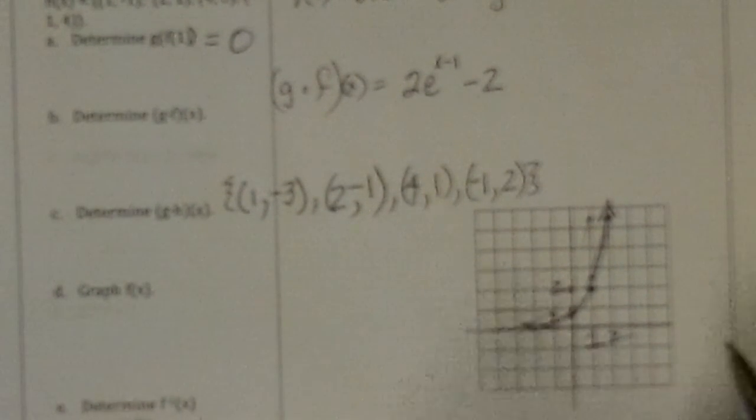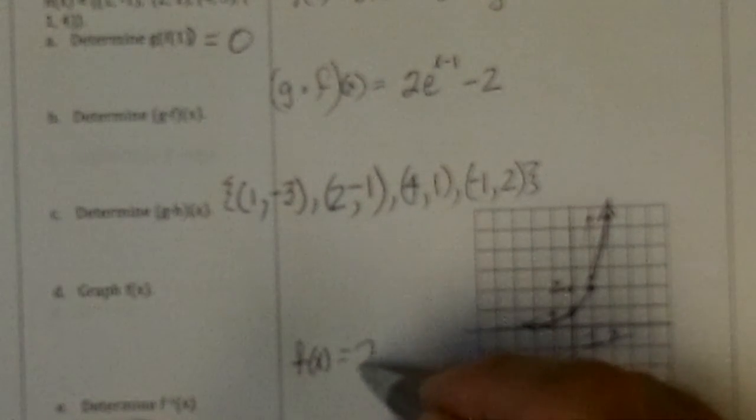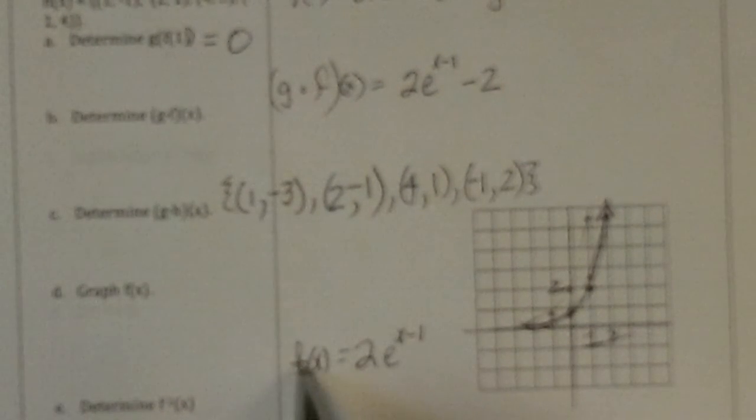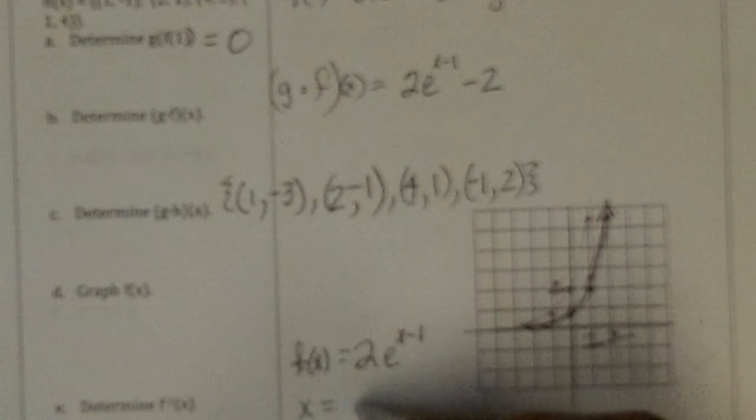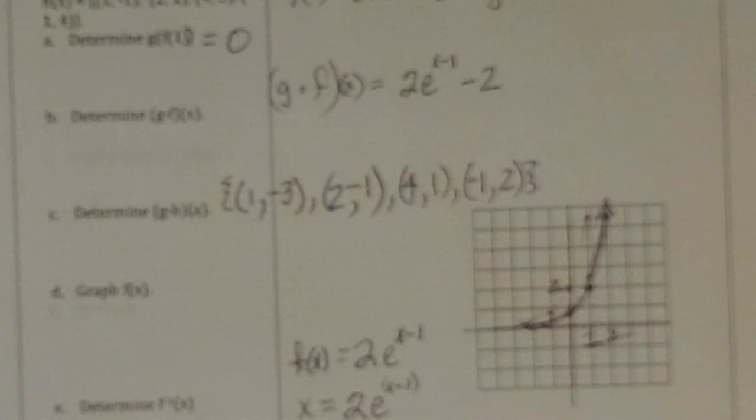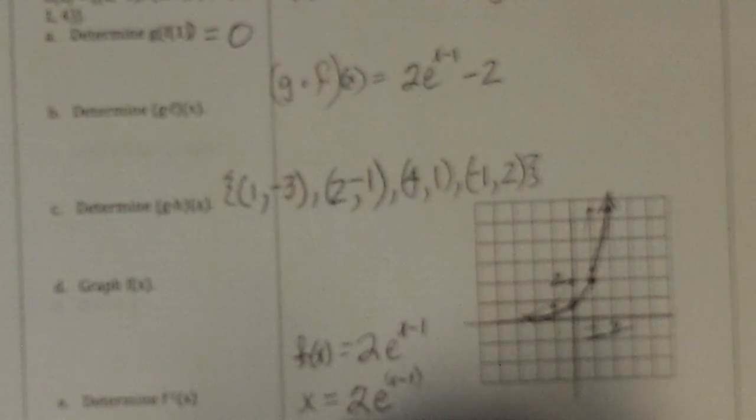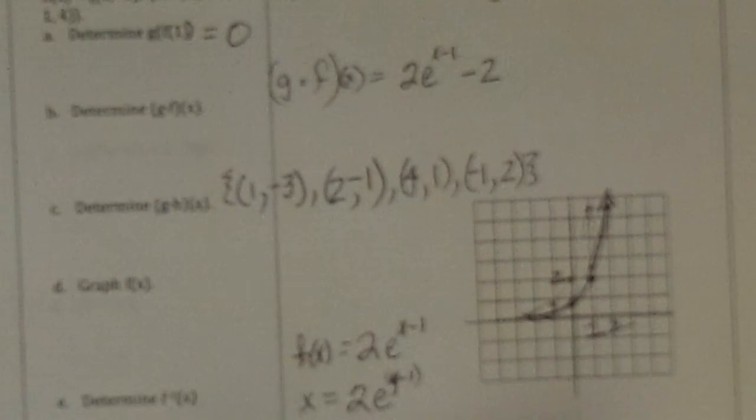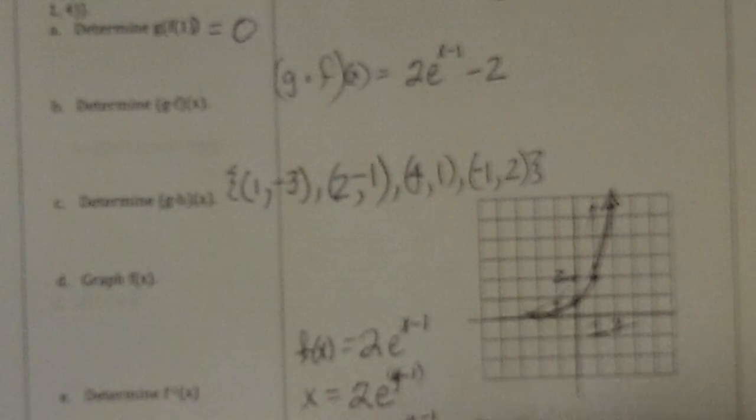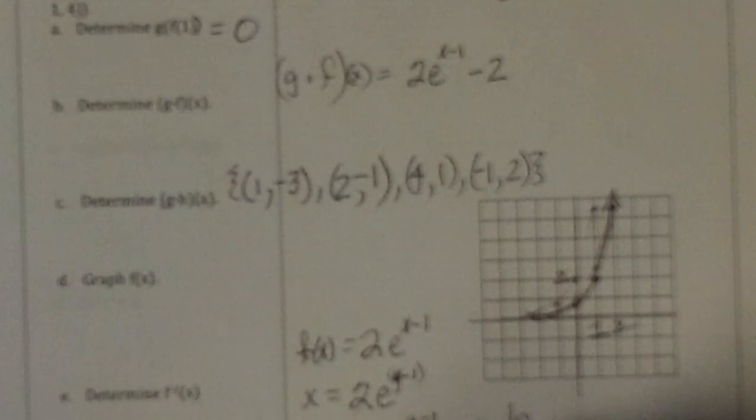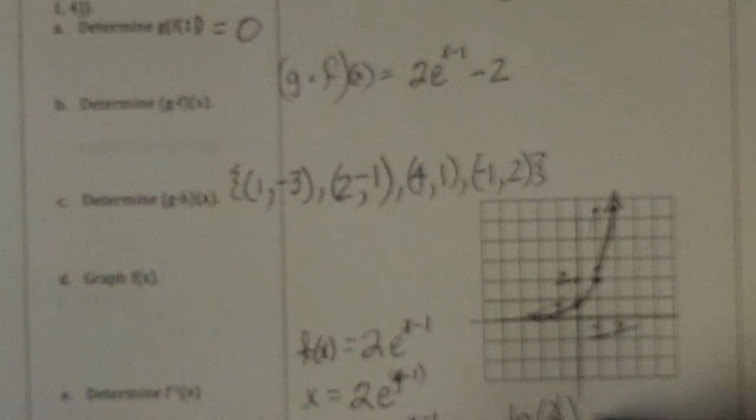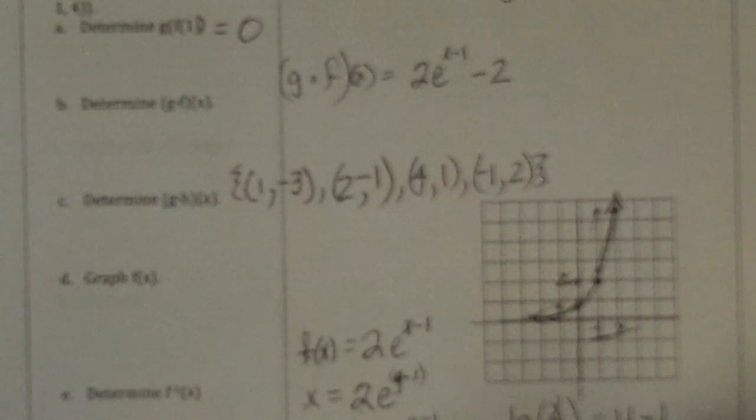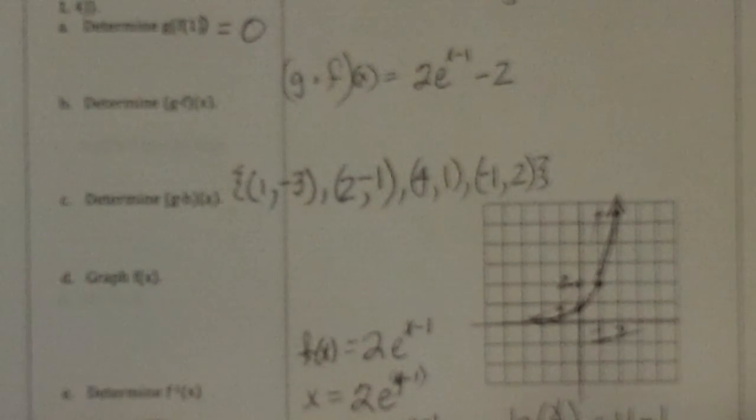And then determine f inverse of x. So if f of x equals 2 e to the x minus 1, you swap y and x to find the inverse. So we get x equals 2 e to the y minus 1 power. Divide the 2 out, so x over 2 equals e to the y minus 1. So now we're trying to solve for the power, so we write it as a log equation. It's base e, so ln. To what power do we take e to get x over 2? And that power is y minus 1. Add 1 to both sides, and we get ln of x over 2 plus 1 is y, which is f inverse of x.